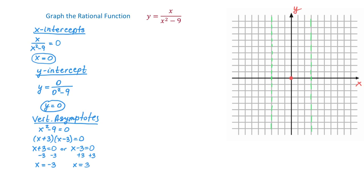Let's continue by finding a horizontal asymptote. To find the horizontal asymptote we have to compare the degrees of the polynomial in the numerator and the polynomial in the denominator. The numerator has degree 1 because the exponent of x is 1. The degree of the polynomial in the denominator is 2 because x has exponent 2. The rule says that if the degree in the numerator is less than the degree in the denominator, then the horizontal asymptote is the line y equals 0, which is the x-axis.